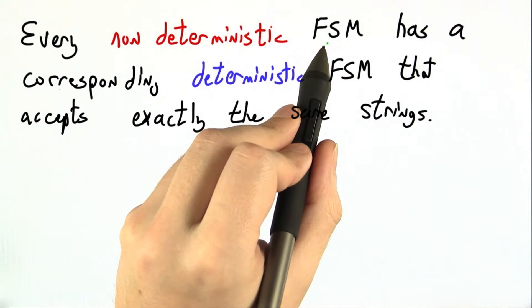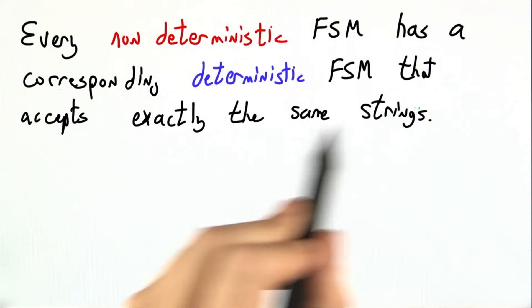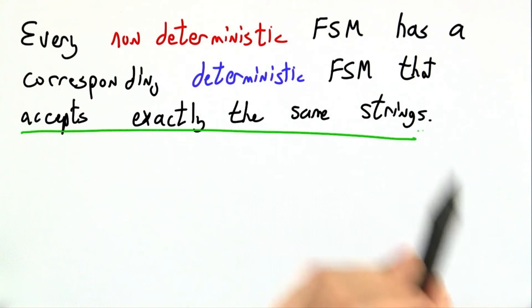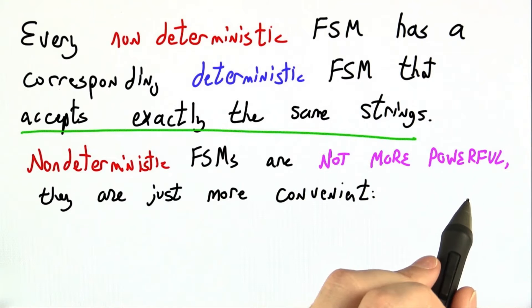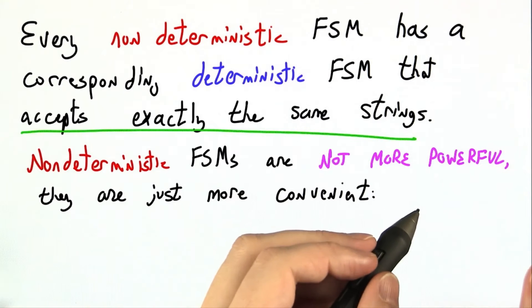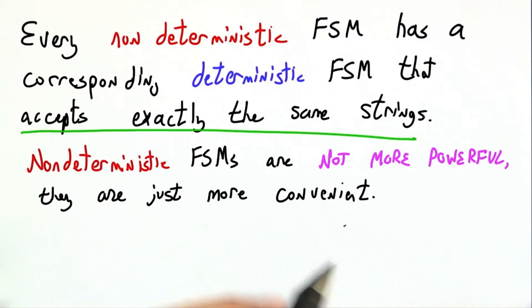Every non-deterministic finite state machine has a corresponding deterministic finite state machine that accepts exactly the same strings. Non-deterministic finite state machines are not any more powerful than deterministic finite state machines. They're just more convenient. It's easier to write them down.